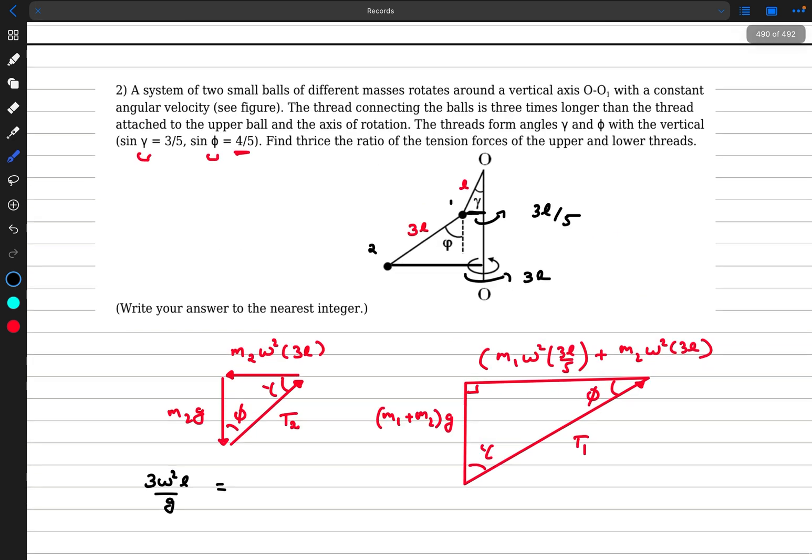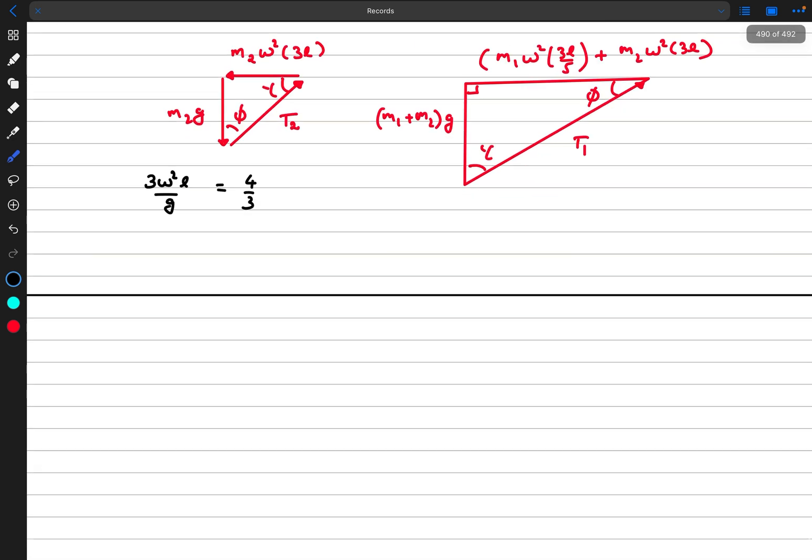So wherever we see 3 omega squared L by g, we'll just put 4 by 3. So now these are two similar triangles, we'll take their ratios. So we want t1 by t2. So t1 divided by t2 equals this side divided by this side equals this side divided by this side, this is because the angles are flipped. So you have to be careful when you're taking the ratios. So we have m1 plus m2 into g divided by m2 omega squared 3L. So here, as you can see, there is an omega squared 3L by g, so this is going to be 3 by 4. So instead of this, we can write it as 3 by 4. So this is going to be m1 by m2 plus 1 into 3 by 4.